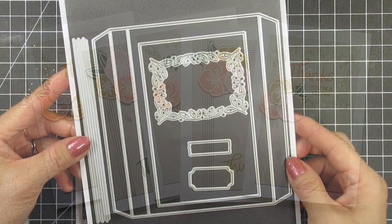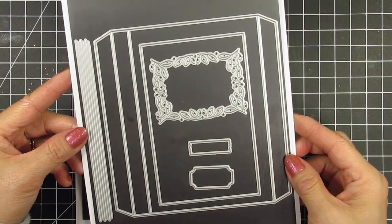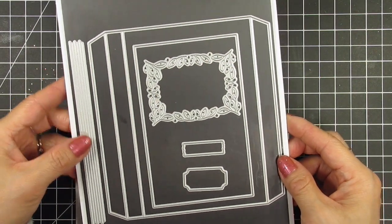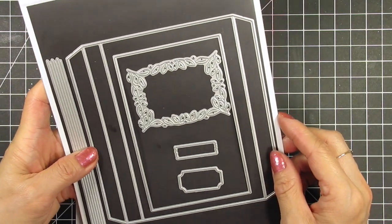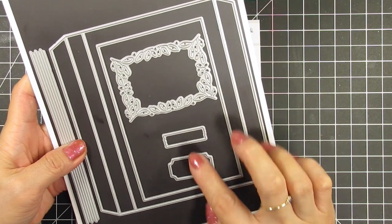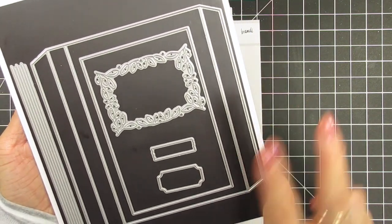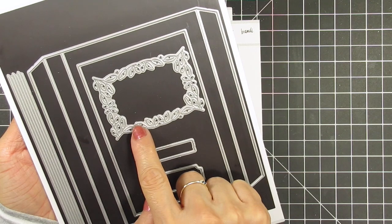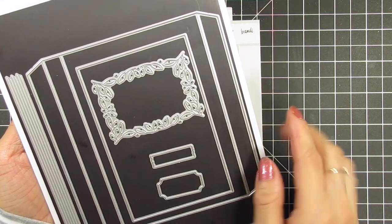The first one is a die set called Shadow Box designed by Brandy Kincaid and it creates a shadow box, so it's appropriately named. It comes with four cutting dies and two foiling dies. The cutting dies include the main die that you'll need to cut two of to form the shadow box, as well as a die to cut out a window and two labels.